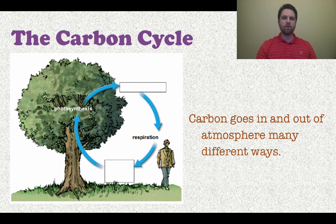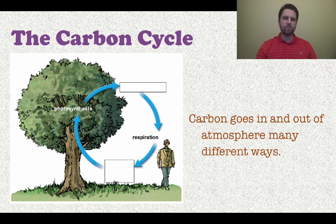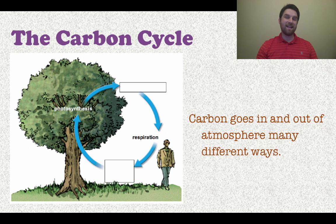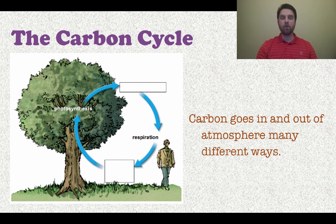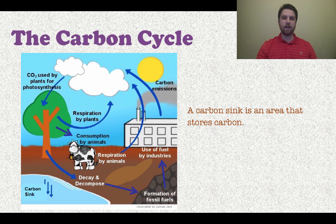The next thing we're going to talk about is the carbon cycle — a little bit more complicated. Carbon is in a number of different forms. Carbon dioxide is the one we think of the most, that's in the atmosphere. How carbon cycles in and out is: we breathe out carbon dioxide, plants take in carbon dioxide and make glucose, which is a carbon-based compound. That's one way we can follow carbon as it goes through the entire cycle.